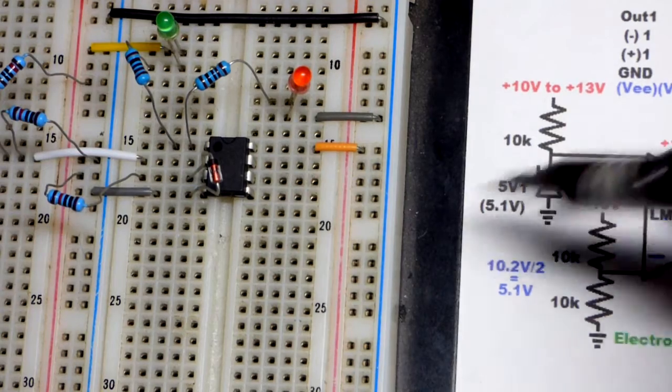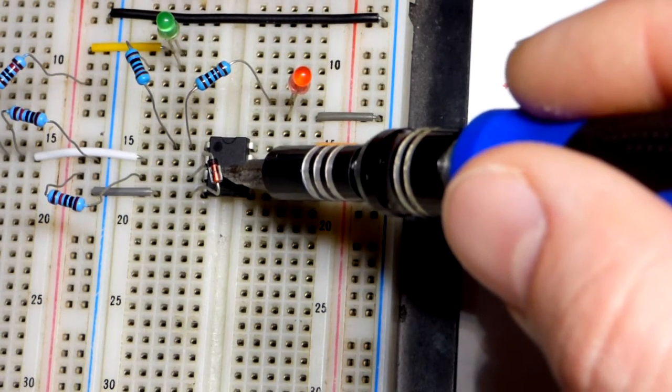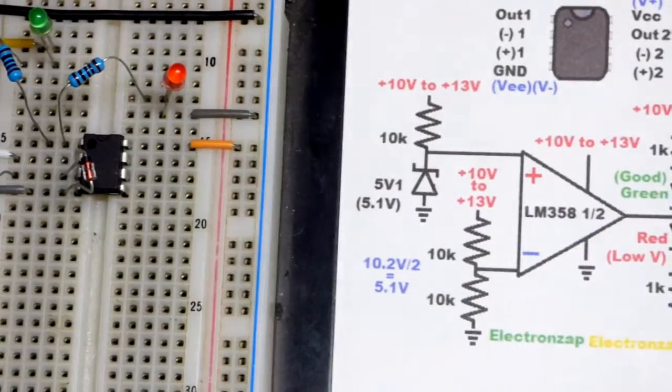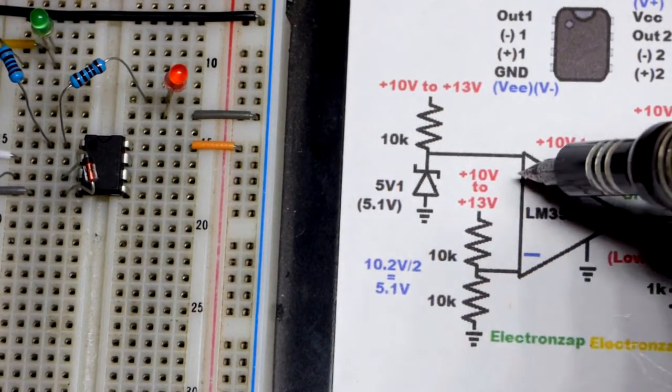And that's going to the non-inverting input which is the lower pin when it comes to the input, even though it's the higher pin on the schematic.